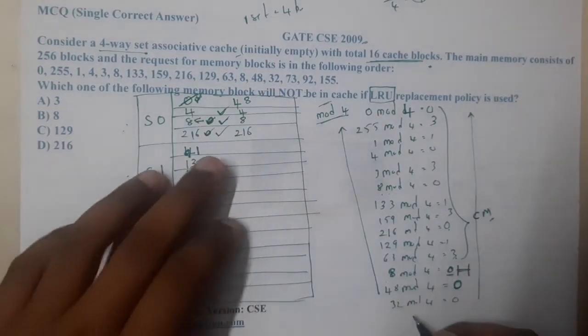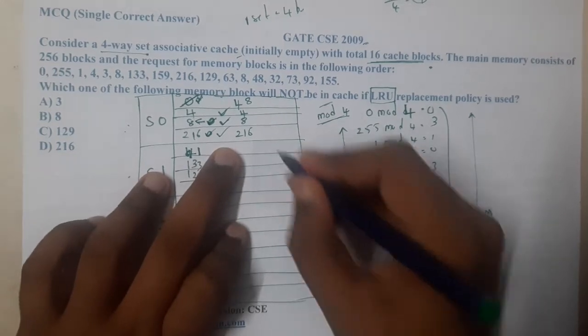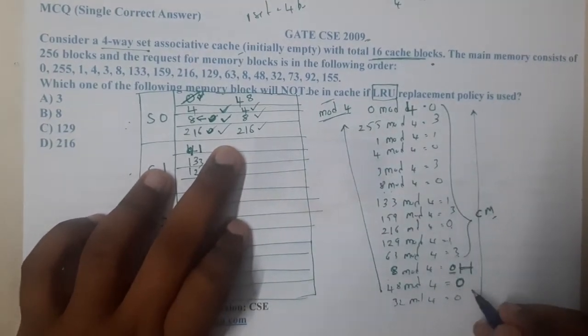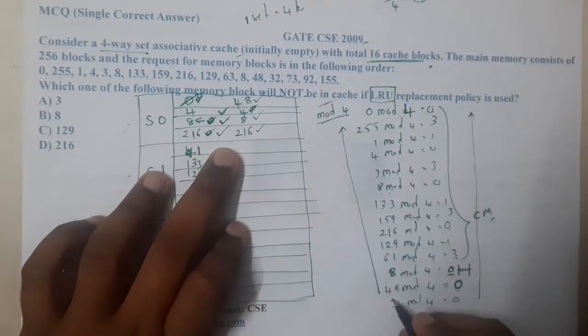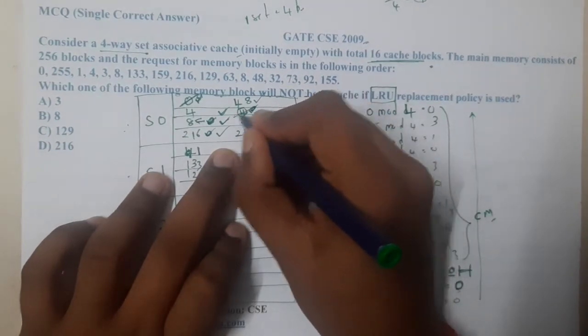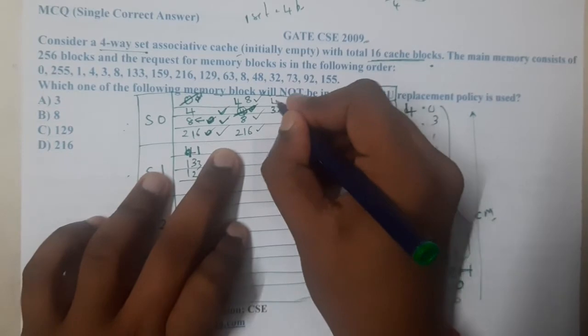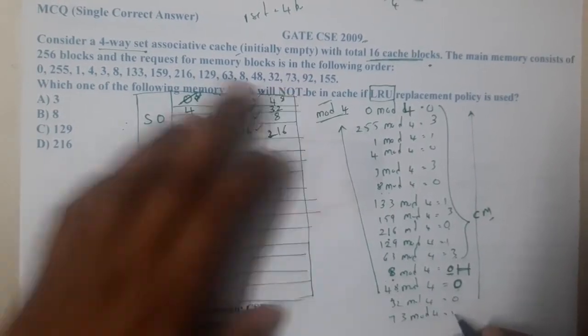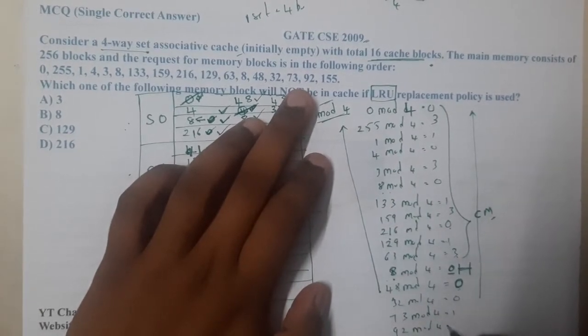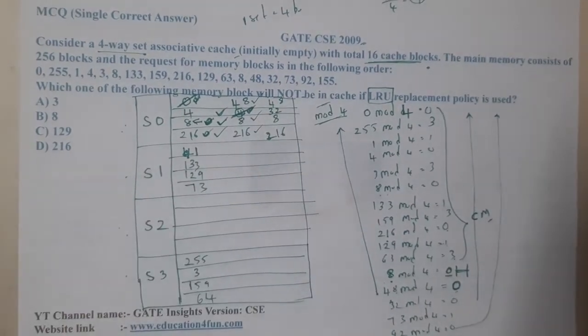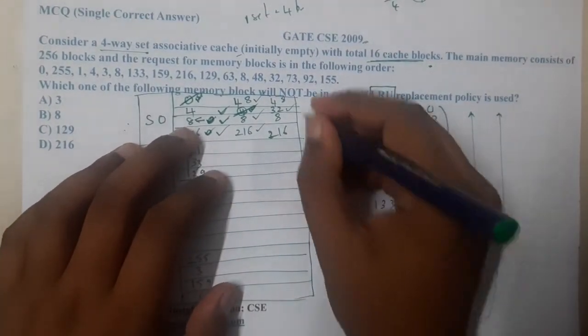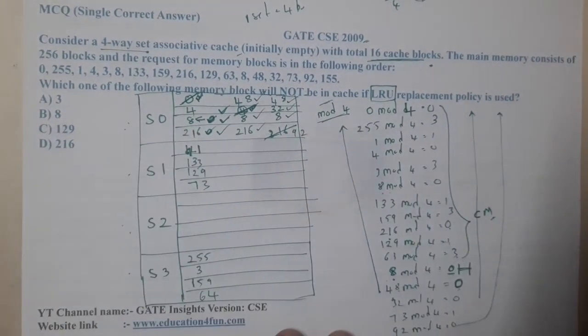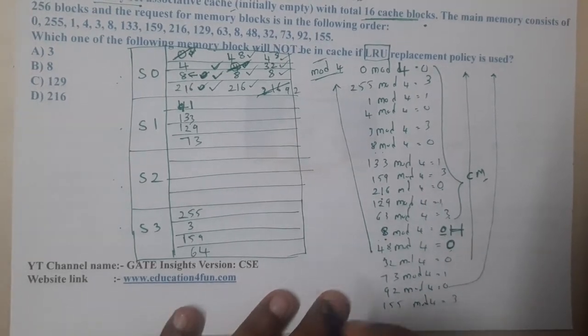48 is added, 8 is added, and 216 is added, so basically 4 is the culprit now. So 4 will be replaced by 32. Now the next number is 73. 73 mod 4 equals 1, so here we got 73. At the end we got 92. 92 mod 4 is again 0, so again we will check above. Recently 32 has been used, before that 48 has been used, before that 8 has been used. So indirectly this 216 will be knocked out and 92 will be entered there. And the last number is 155. 155 mod 4 is 3, so in this set which is oldest? 255, so 255 will be replaced by 155.